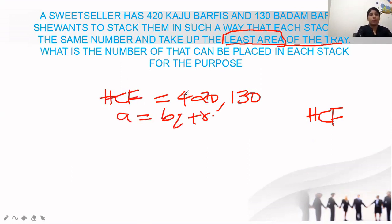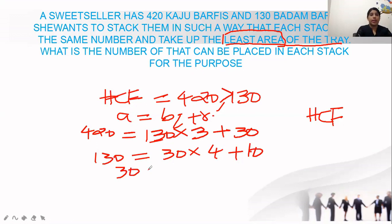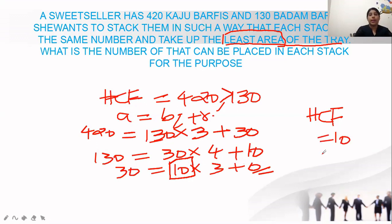Using Euclid's algorithm: 420 equals 130 into 3 plus 30. Then 130 equals 30 into 4 plus 10. Then 30 equals 10 into 3 plus 0. Since the remainder is 0, the b value of this step is our HCF. The HCF of 420 and 130 is 10. So the least area tray for stacking corresponds to HCF equals 10.